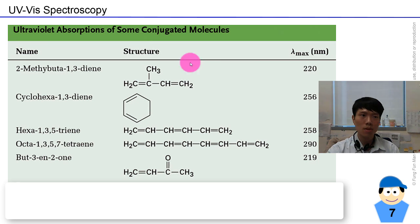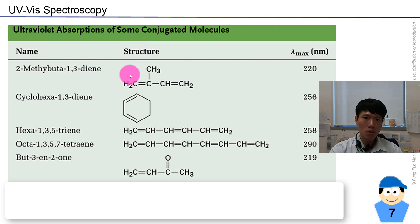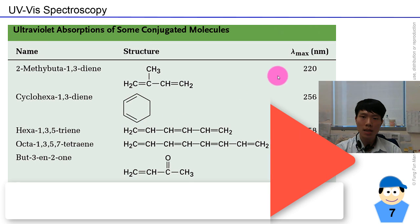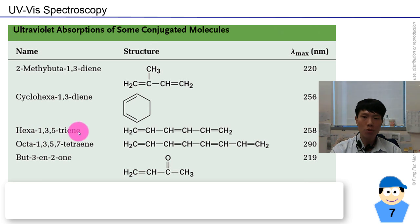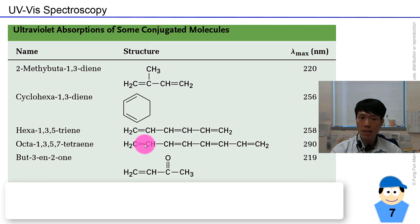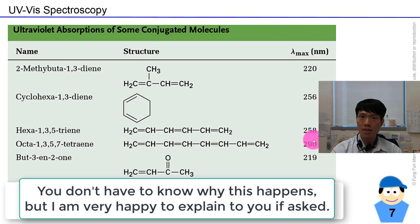This table illustrates how the maximum absorption wavelength relates to molecular structure. For 2-methylbuta-1,3-diene, conjugated pi bonds (pi–sigma–pi) give a certain lambda max. A related structure enclosed in a 6-membered ring gives a different value due to structural constraints. For hexa-1,3,5-triene (triple conjugated pi bonds), the energy and lambda max are raised higher. So, the more conjugated pi bonds (pi–sigma–pi repeating), the higher the lambda max.